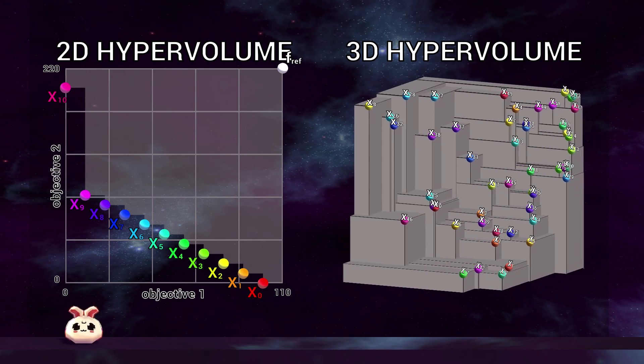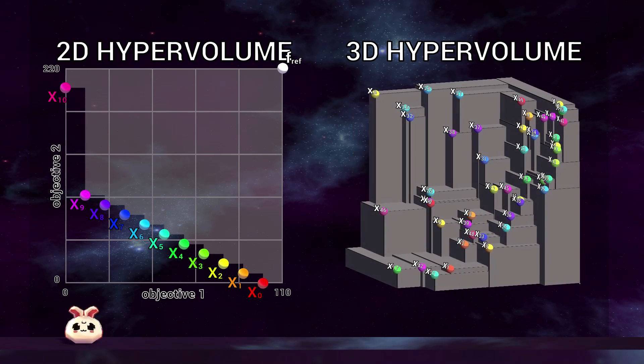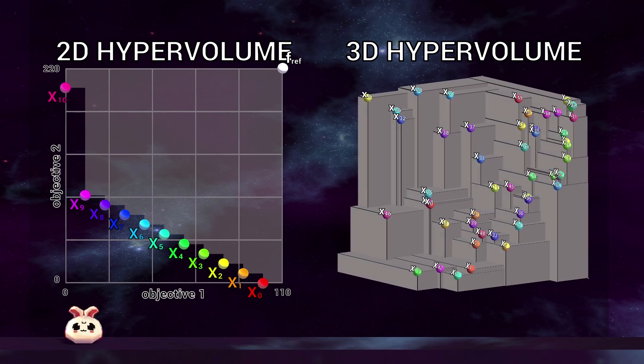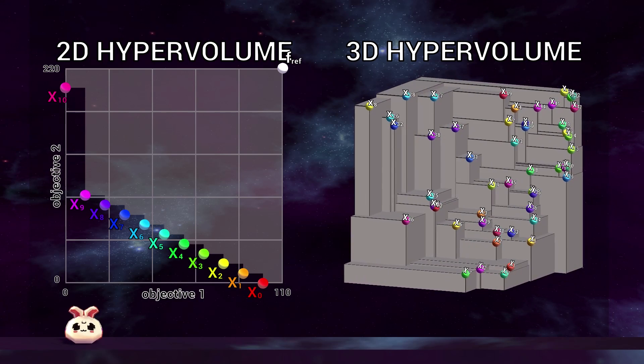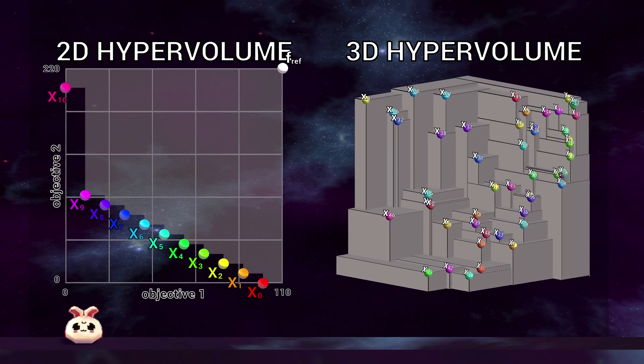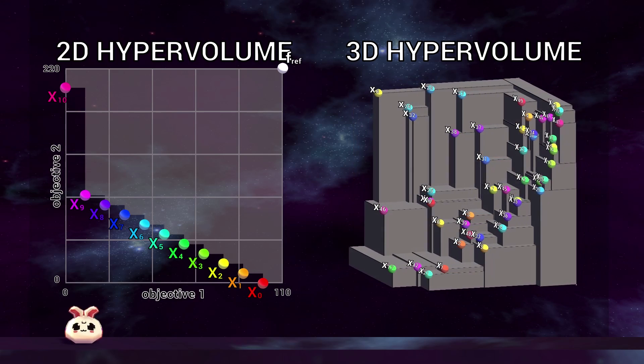In three dimensions, it's simply the volume, and in two dimensions, it's simply the area. However, we will continue with examples consisting of two or three objectives, simply because it's too difficult to intuitively illustrate in four or more dimensions.